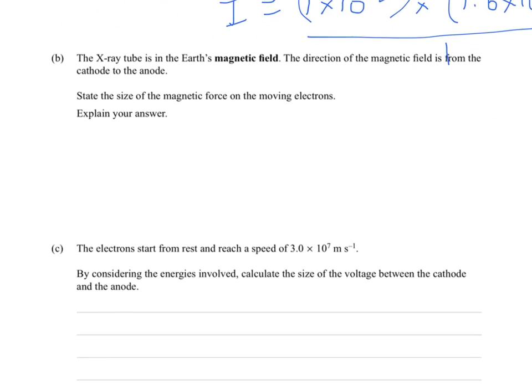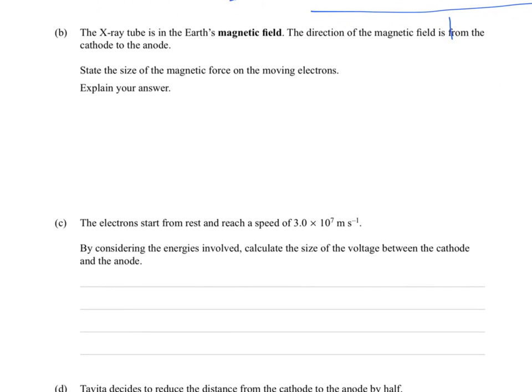B. The X-ray tube is in the Earth's magnetic field. Okay, this is interesting. We're linking magnetic fields and electric fields. The direction of the magnetic field is from the cathode to the anode.